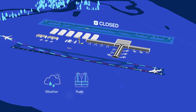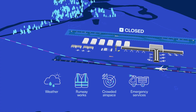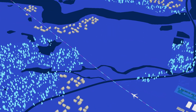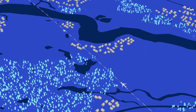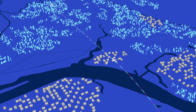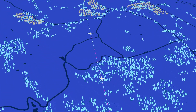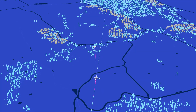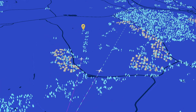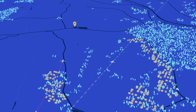Sometimes factors outside air services control, such as weather, runway works, crowded airspace, and emergency services operations, mean that planes may temporarily need to leave their usual flight paths. When this happens, air traffic controllers adjust operations to suit the conditions, providing precise instructions to pilots to maintain safe separation of all aircraft.